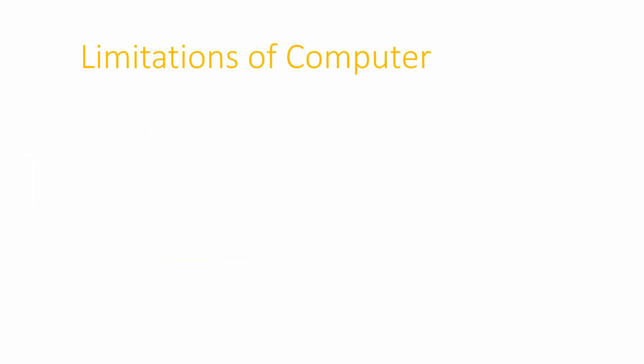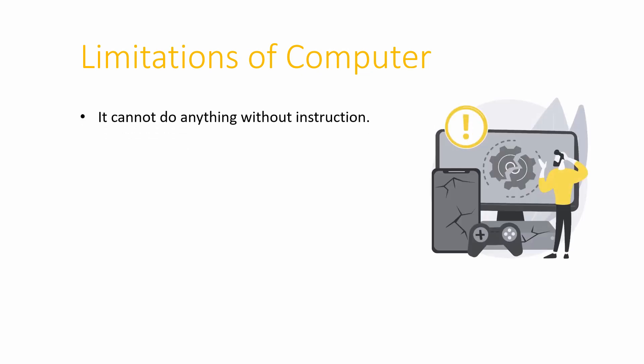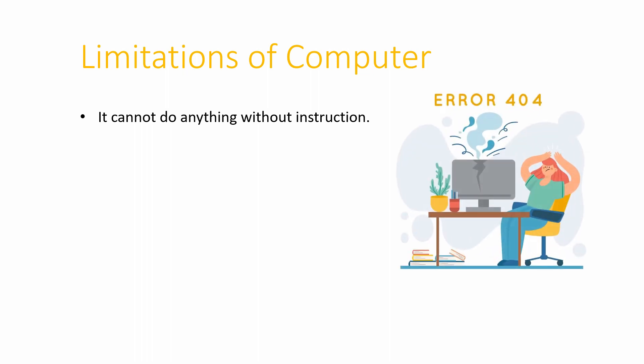Now let me tell you about the limitations of computer — its weakness or weak points. It cannot do anything without instructions. Our computer system cannot perform any task in the absence of instructions provided in the form of programs or software. If there are missing instructions or program files, it will not work or will provide an error message. So it works based on the instructions provided to it in the form of software — it cannot do anything without instructions.